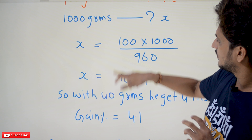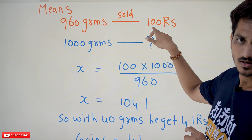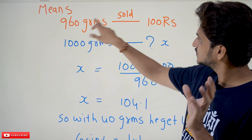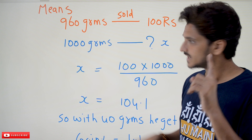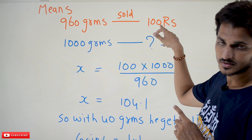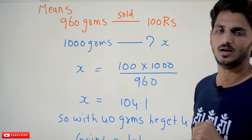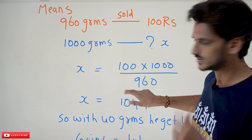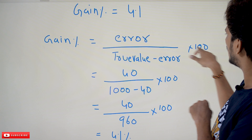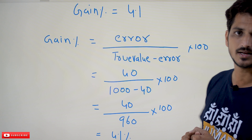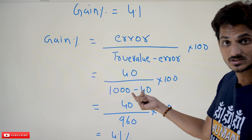Because 960 grams are sold at 100 rupees — for 40 grams, if 1000 grams were sold at 100 rupees you would get exactly 4 rupees, but here 960 grams are sold at 100 rupees, so for 40 grams you got 4.1 rupees. This point is very important to understand the equation. Gain percentage equals error divided by (true value minus error) multiplied by 100, so that is 40 out of 960 — which is 1000 minus 40.